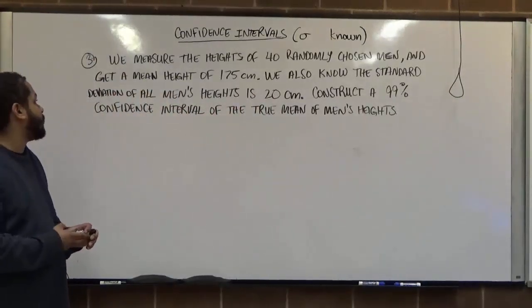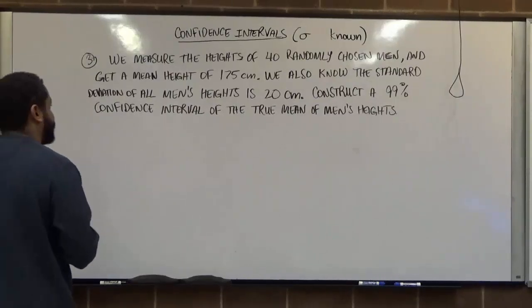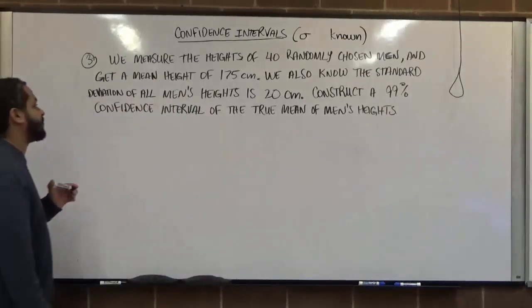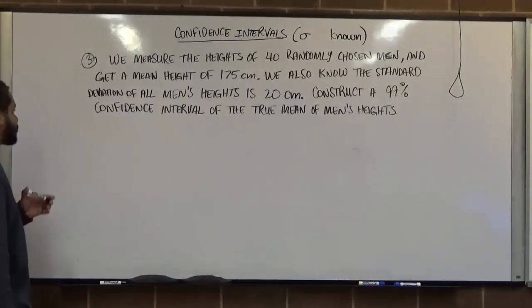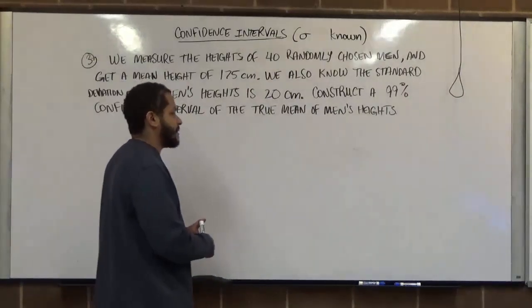Now, here we have our question. We measure the heights of 40 randomly chosen men and get a mean height of 175 centimeters. We also know the standard deviation of all men's heights is 20 centimeters. Construct a 99% confidence interval of the true mean of all men's heights.